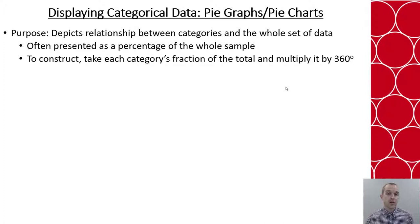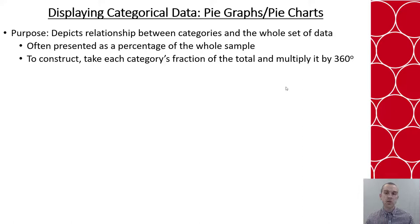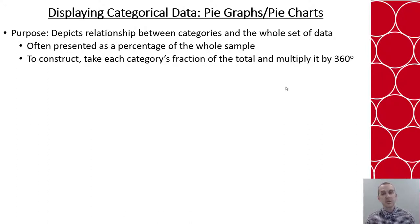Another form used for categorical data is pie graphs, also known as pie charts. The purpose is to show the relationship between categories as a whole set. Often we will see these written with percentages of the whole sample. To construct one yourself, create the category's fraction out of the total and then multiply it by 360 degrees and use that angle measure to form that slice of the pie. Often we use programs like Excel or other spreadsheet programs to help, so it shouldn't be something you have to do by hand.